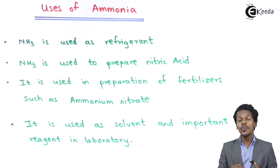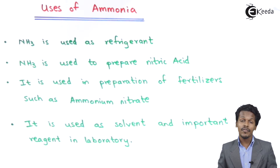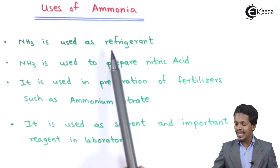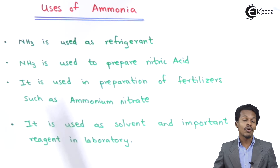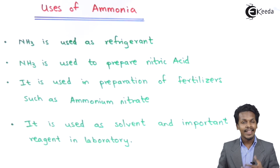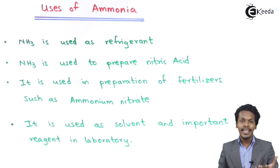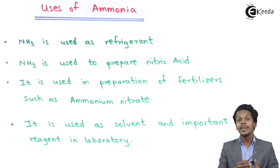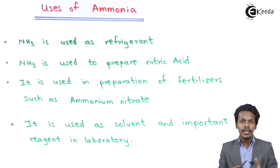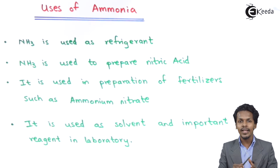Here are a few points about the uses of ammonia. Starting with the first one: ammonia is used as a refrigerant, which is also known as a cooling agent. Liquid ammonia produced under high pressure — when N2 and H2 are combined to form NH3 — is used as a refrigerant.